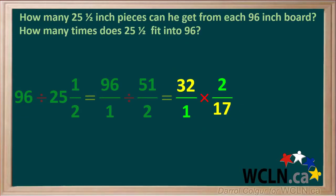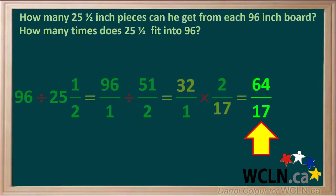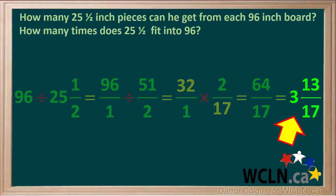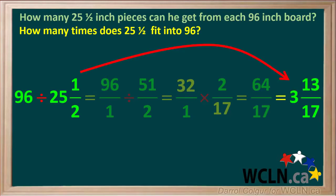So we are left with 32 over 1 times 2 over 17. Multiplying the numerators, 32 times 2 gives us 64. And multiplying the denominators, 1 times 17 gives us 17. So we are left with the fraction 64 over 17. This is an improper fraction, so we convert it to a mixed number. 17 goes into 64 three times; 17 times 3 equals 51, so the remainder is 64 minus 51, which is 13 seventeenths. Our final answer is 3 and 13 seventeenths. So 96 divided by 25 and a half equals 3 and 13 seventeenths.